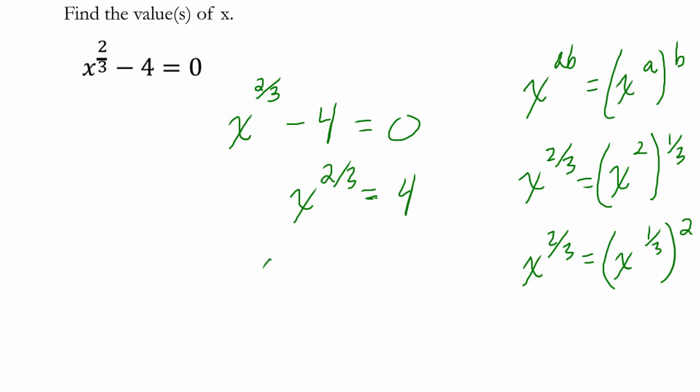So we have x to the 2 thirds power. I'm going to take the square root of that, I'm going to multiply the exponent of 2 thirds by 1 half and I'm also going to find the half power of 4. So 2 thirds times 1 half is 1 third. Those 2's cancel out. And the square root of 4 could be a positive or a negative 2.